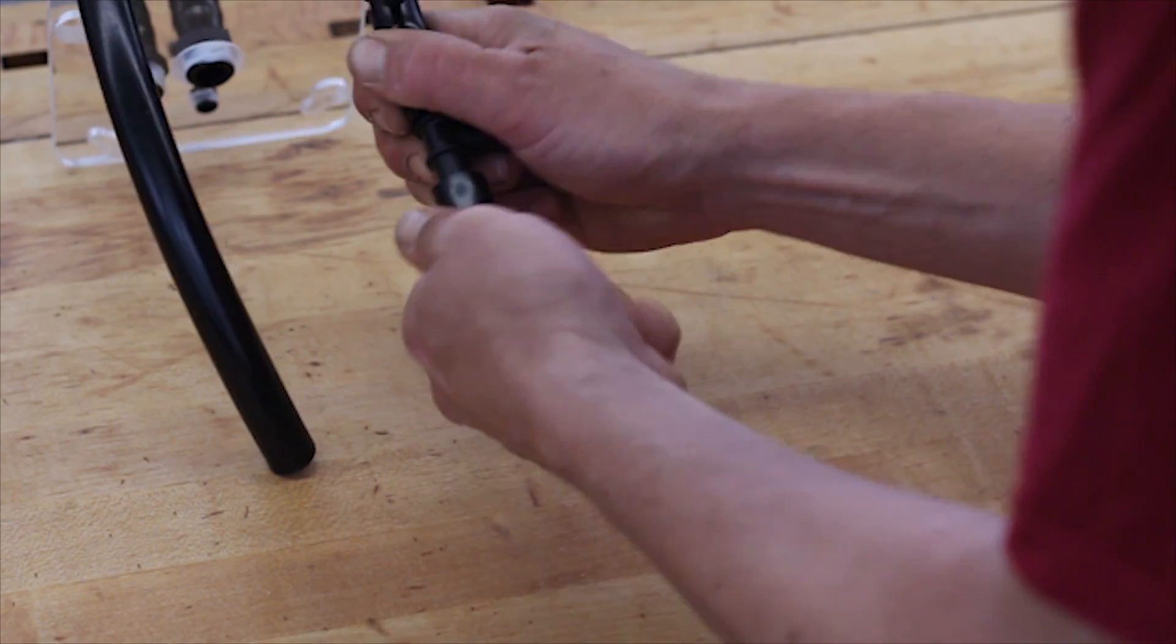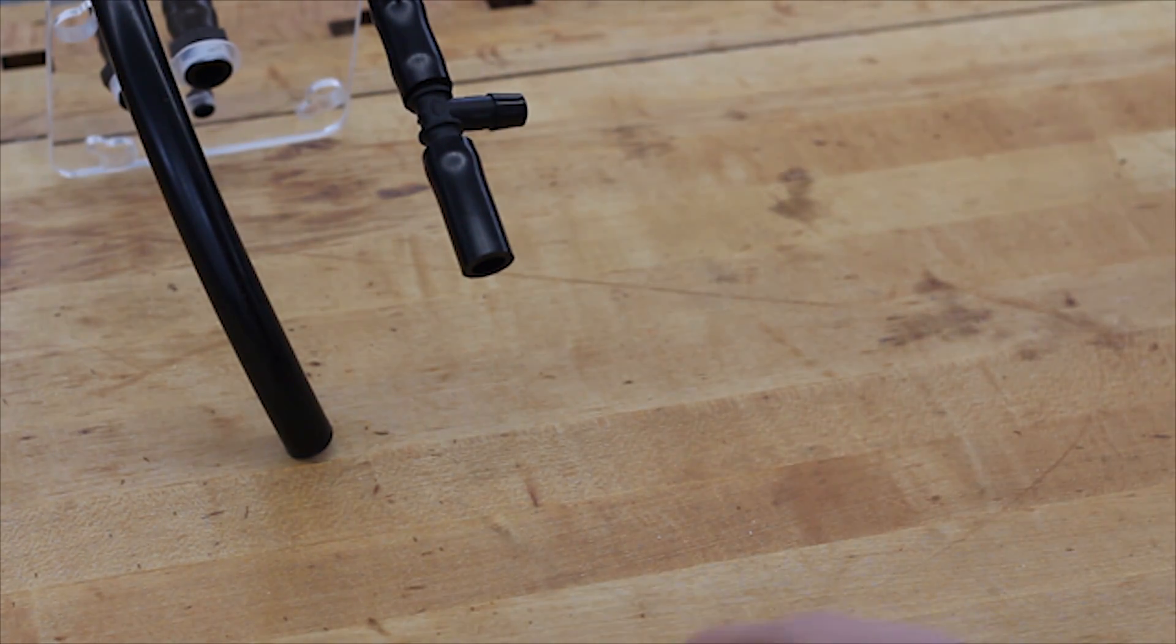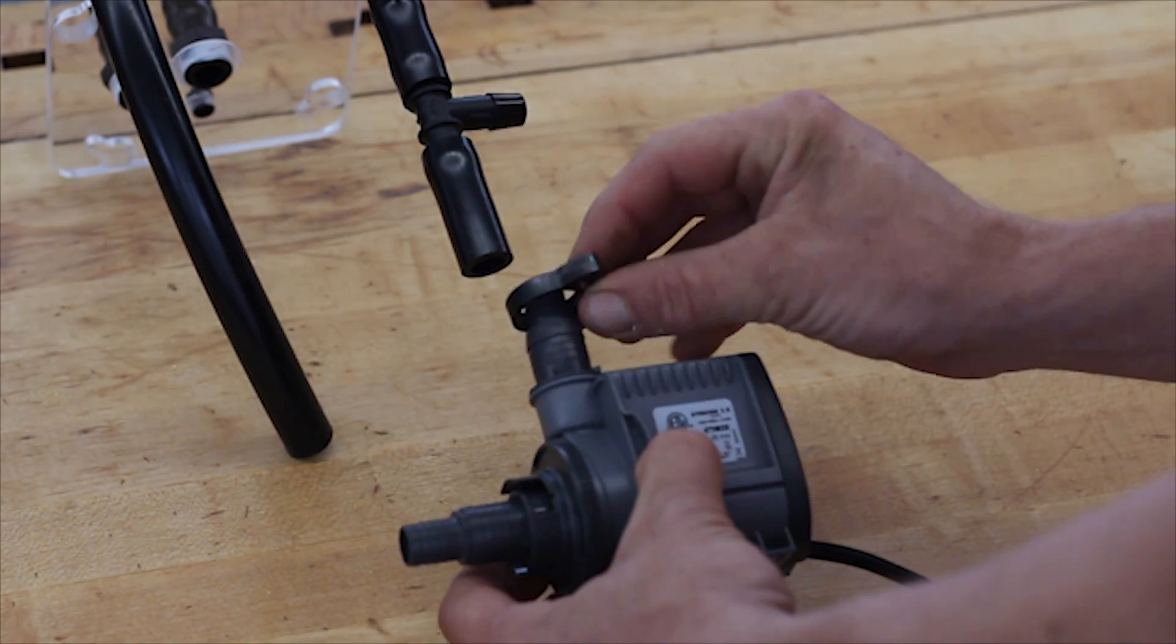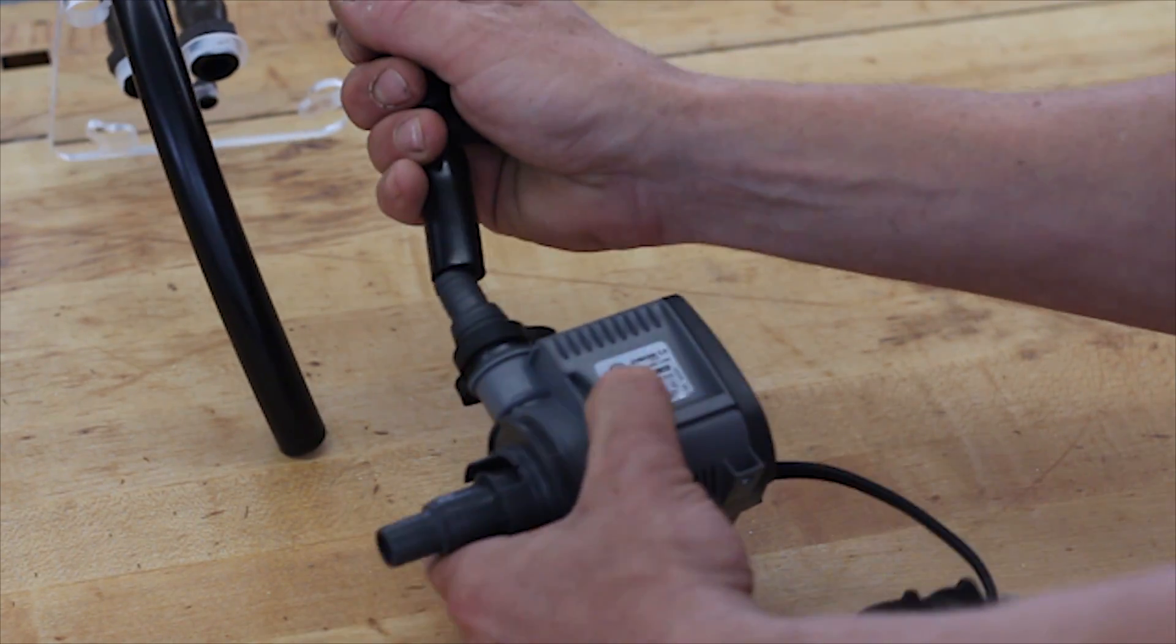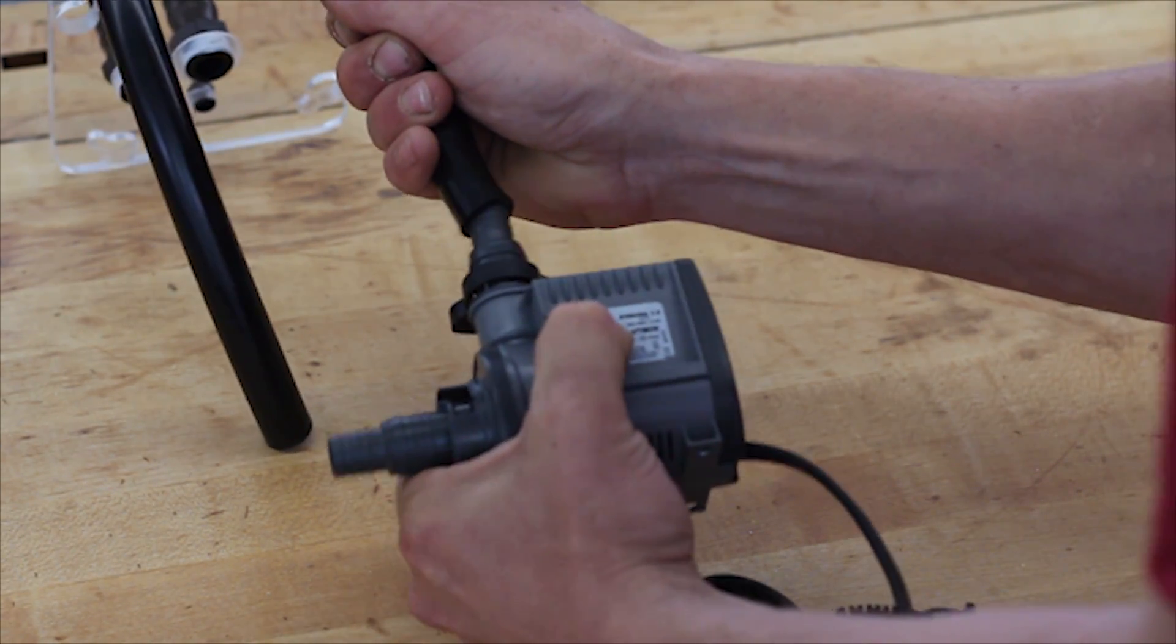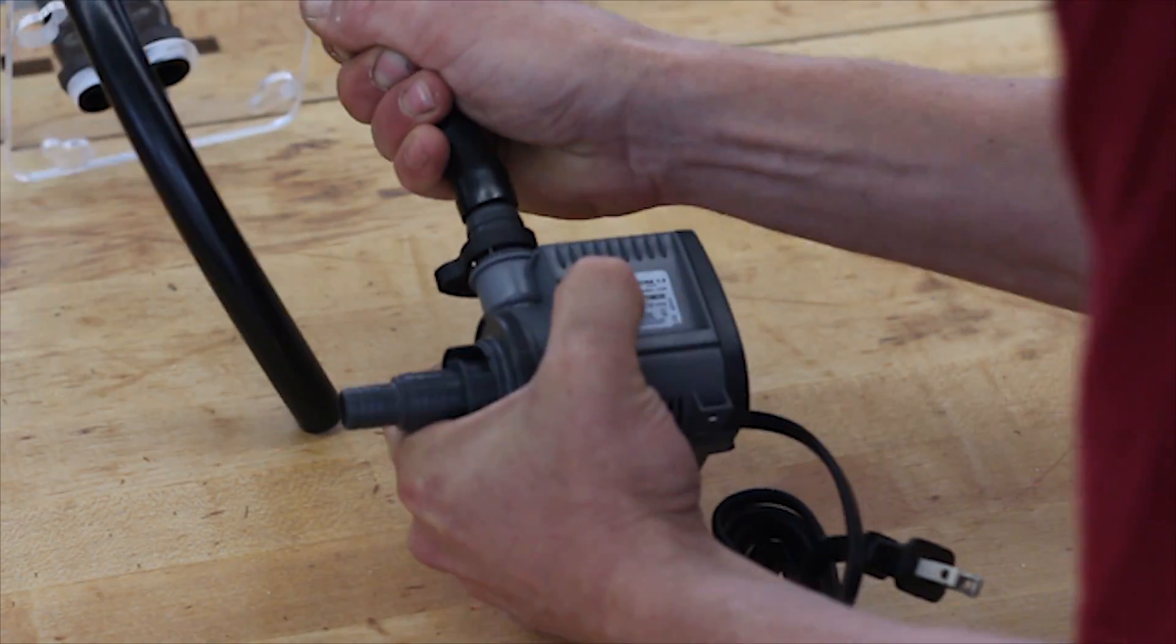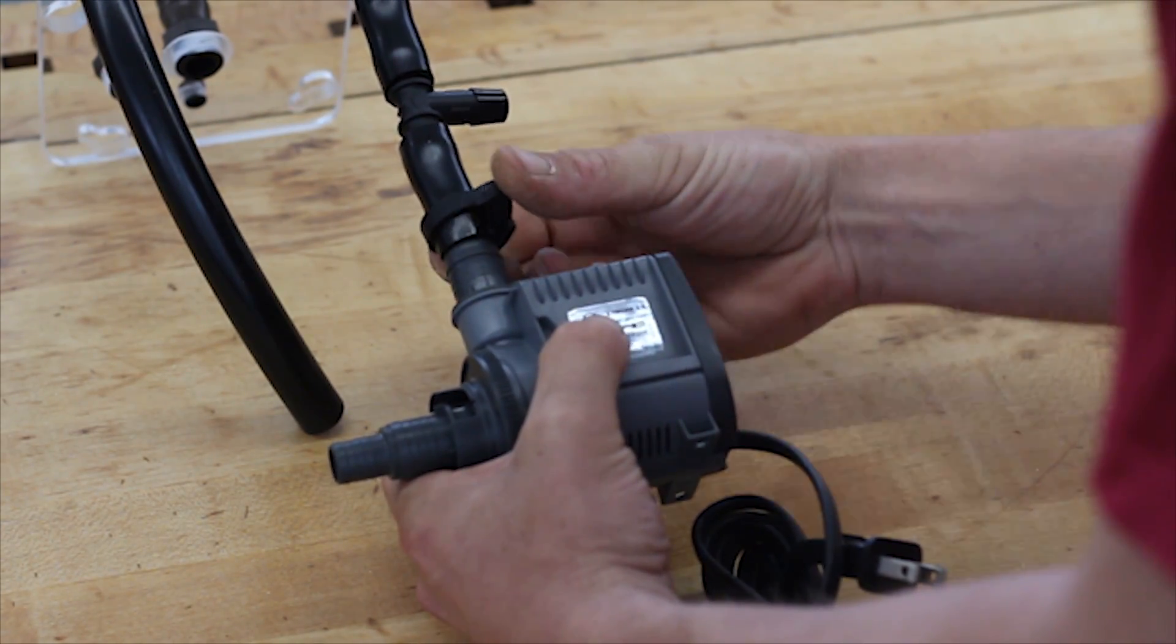We're going to take one of the short sections of tubing, place it on the T. Slide one of your tube clamps over the barb and push on your pump. Tighten up your clamp.